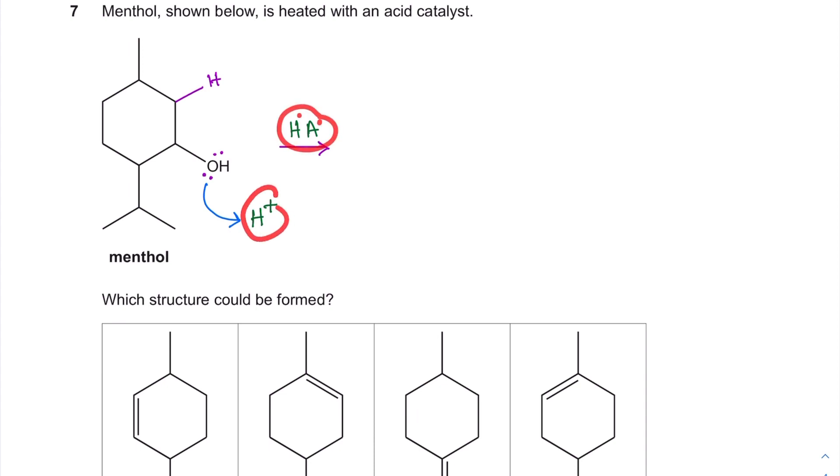And this lone pair will attack the H plus to protonate that OH to become water. This is the acid dissociating with heterolytic fission to form the cation H plus and anion A minus. This is the H plus here protonating the OH to form H2O. And this is a new structure.